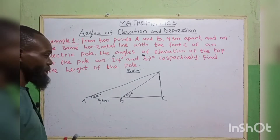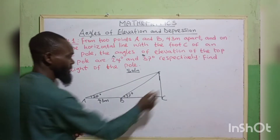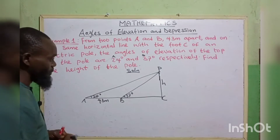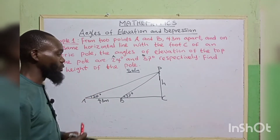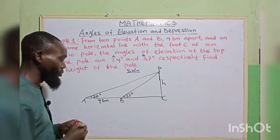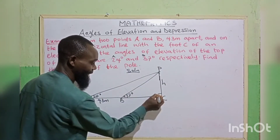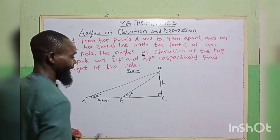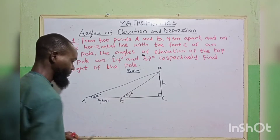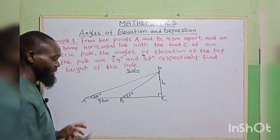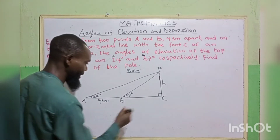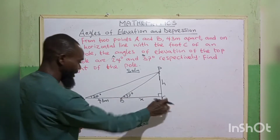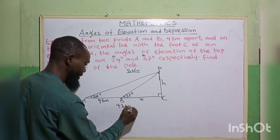We want to find the height of this pole, H. To find the height of the pole, we must identify the triangles we have. We have two right-angle triangles. When we have vertical and horizontal, we have a 90-degree angle. So we have triangle PBC and triangle PAC. If the distance between A and B is 43 meters, let's call the distance between B and C as X. So the distance between A and C will be 43 plus X meters.